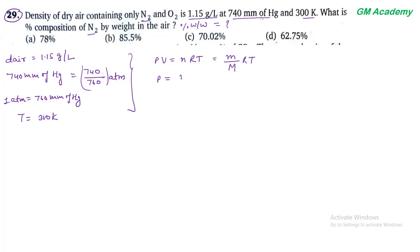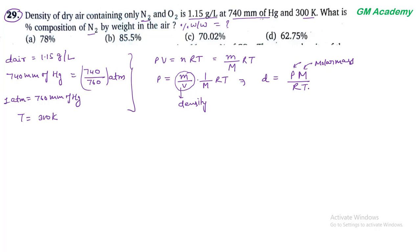D = PM/RT में values put करते हैं: 1.15 = (740/760) × M / (0.0821 × 300)। Solving for M: molar mass = 29.09 gram/mol। यह हमारा molar mass of air हो गया।